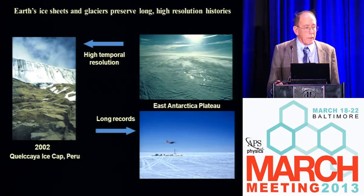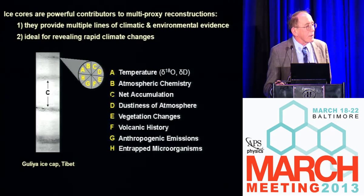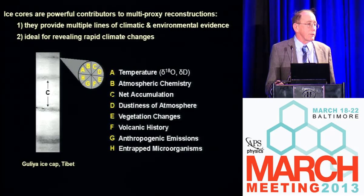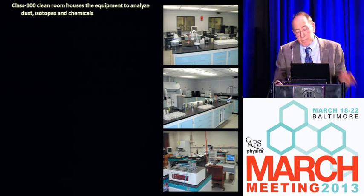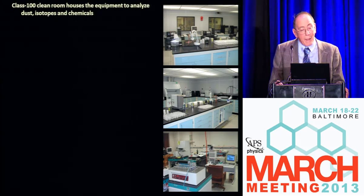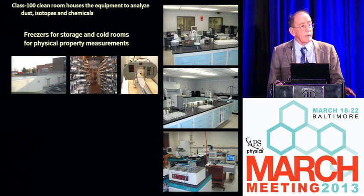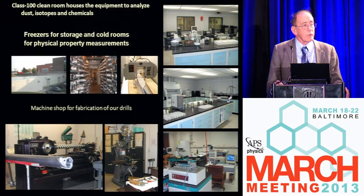Ice records many parameters in the climate system. I'm only going to mention two: temperature as recorded in the isotopes of oxygen and hydrogen in the ice, and the net accumulation — the amount of precipitation that falls through time. There are very few archives that allow us to look at that, and ice does. The analyses are done in clean rooms — the chemistry, the dust, isotope labs. We now have over 7,000 meters of core stored at minus 30 degrees C. It's the only tropical collection on Earth, and we design and build the drills to recover these cores — they have to be lightweight, portable systems.